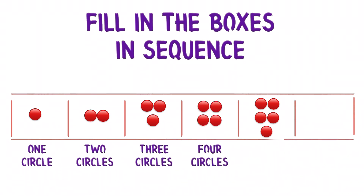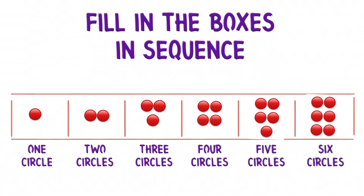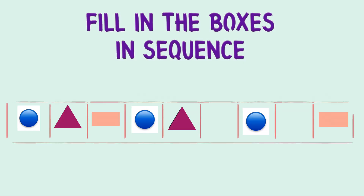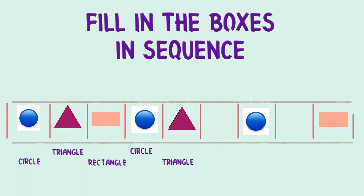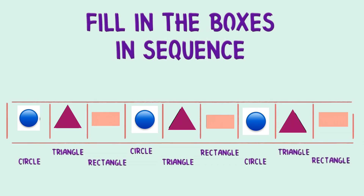Patterns in shape — fill in the boxes in sequence. One circle, two circles, three circles — next will be four circles, five circles, then six circles. Circle, triangle, rectangle, circle, triangle — so next is rectangle, circle, then triangle, rectangle.